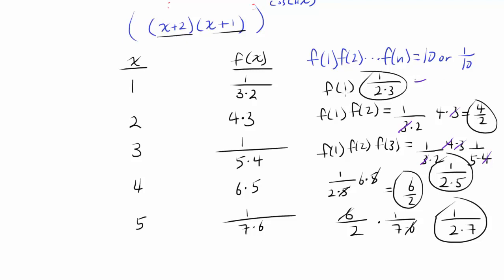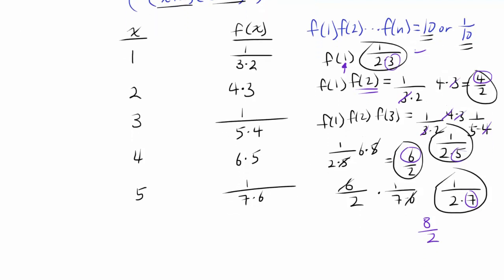A pattern emerges: when the last f value multiplied corresponds to an odd n, you get 1 over 2 times some odd number, increasing by 2 each time. When the last f value corresponds to an even n, you get some even number divided by 2, also increasing by 2. We want to get either 10 or 1 tenth. We can see 1 over 2 times 5 equals 1 tenth right here, so n equals 3 gives us 1 tenth. That's one value found.